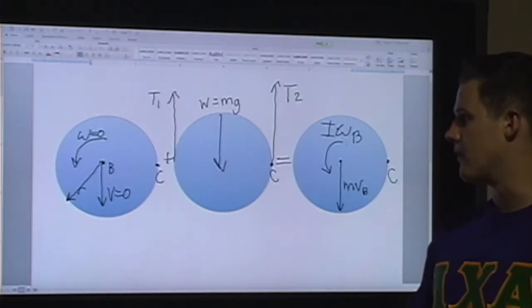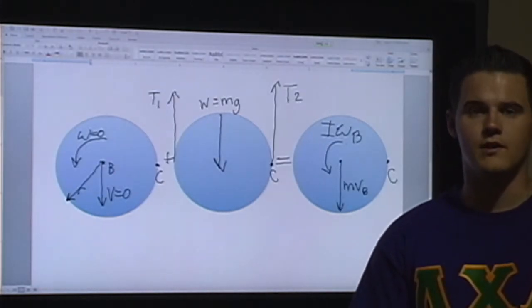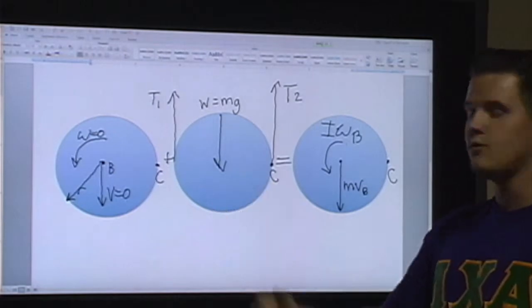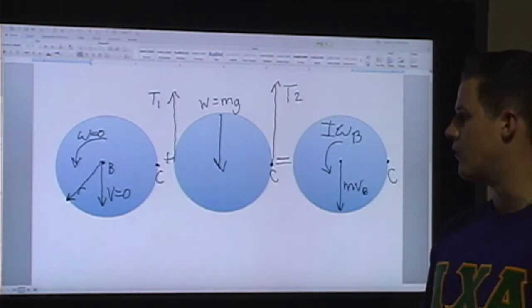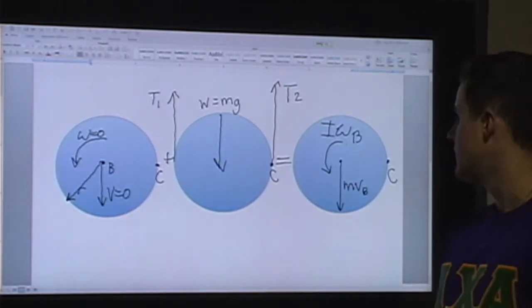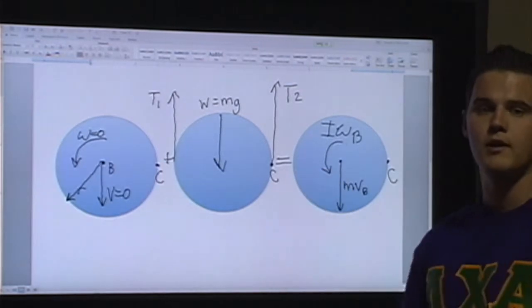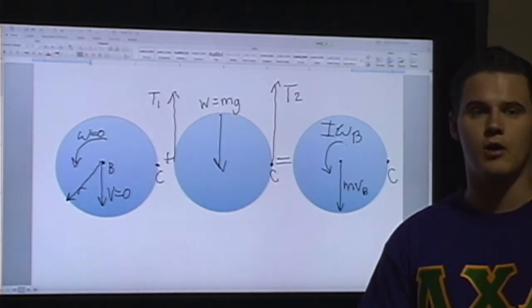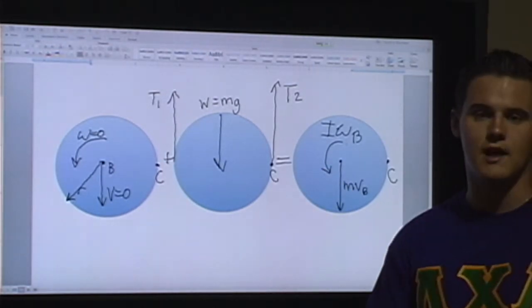Next, we look at our free body and kinetic diagrams for disk B. We have our two tensions in our chords, along with the weight pulling down, as well as equaling our moment of inertia about B and the tangential velocity at B.